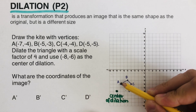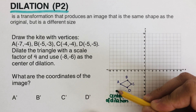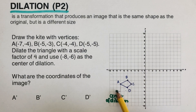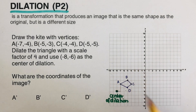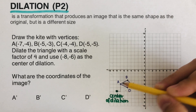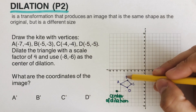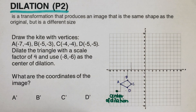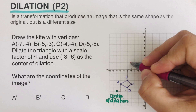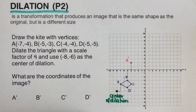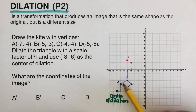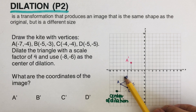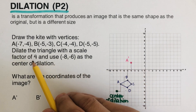First, we determine how far point A is from the center of dilation — it's one and a half units away. We then measure that distance four times to locate A prime. A prime ends up four times farther from the center of dilation than A, which confirms our scale factor of four.